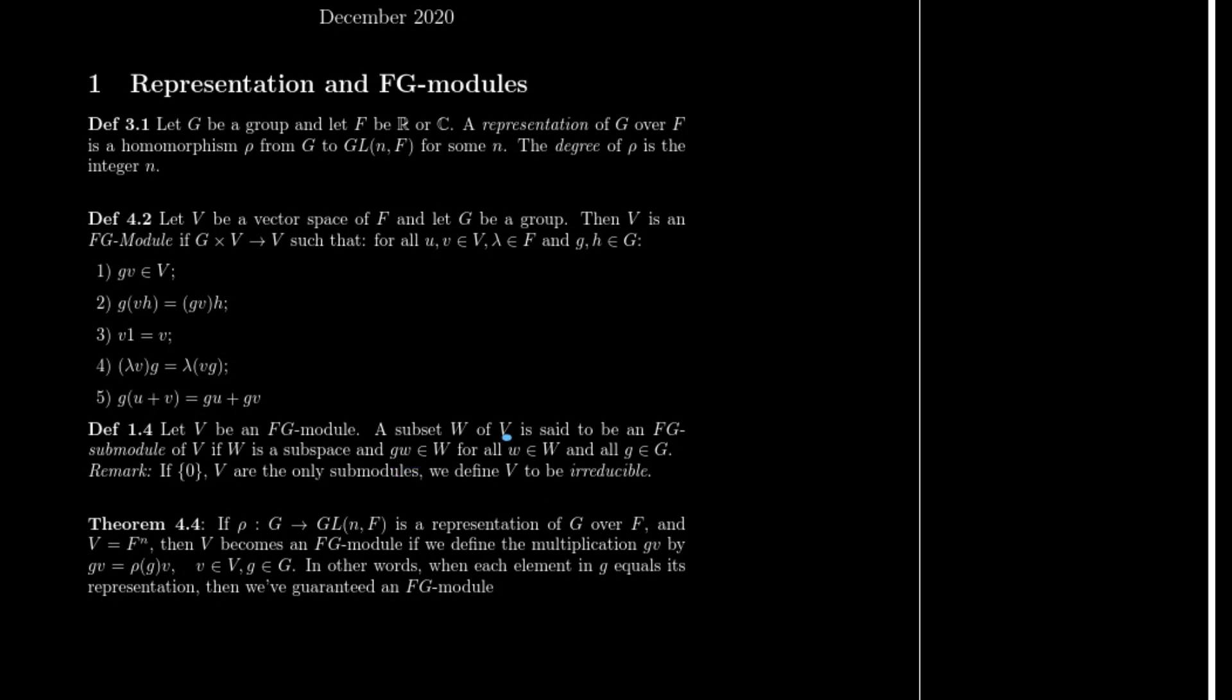Let's take definition 4.2 and 3.1 and marry them together. How do we get representations into our FG modules? Well, if we look at 3 and 4.4 here, we're able to see that it takes actually quite a little bit of definition. I mean it in the sense of, we genuinely only need to define a little bit more. We only need to define multiplication GV by the rule that GV equals a representation ρ of G times V. In other words, it's when each element in G equals its representation, in which case we've guaranteed an FG module. So let's go ahead and prove this.